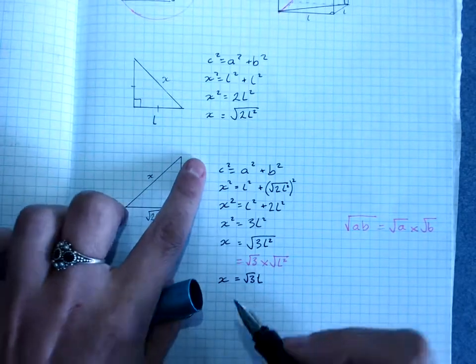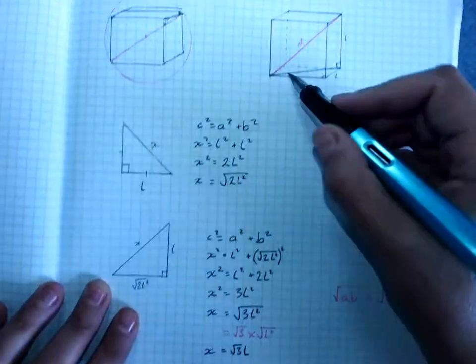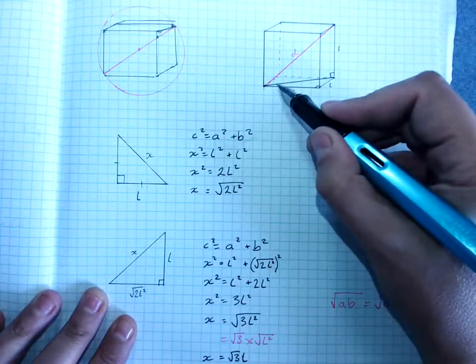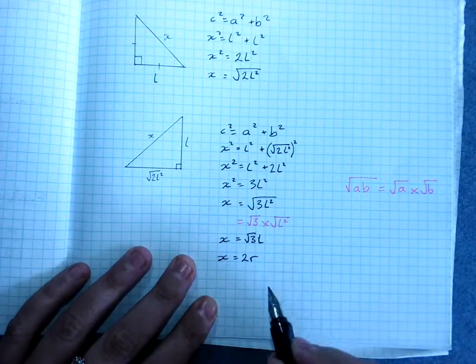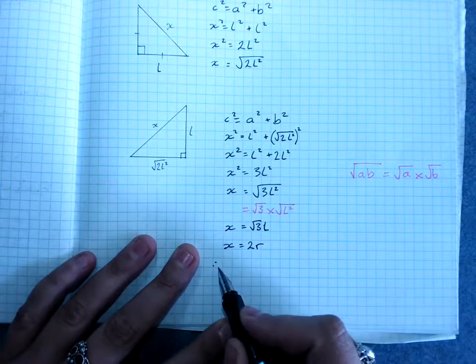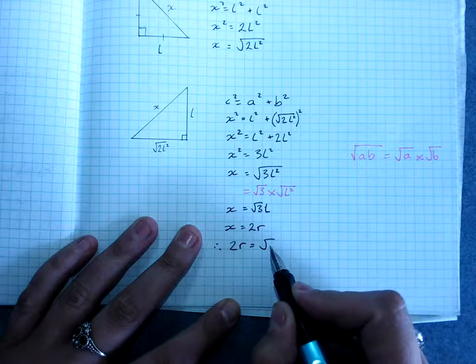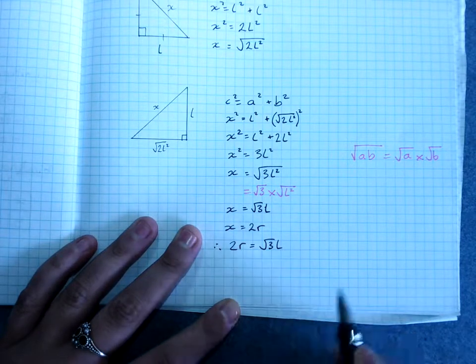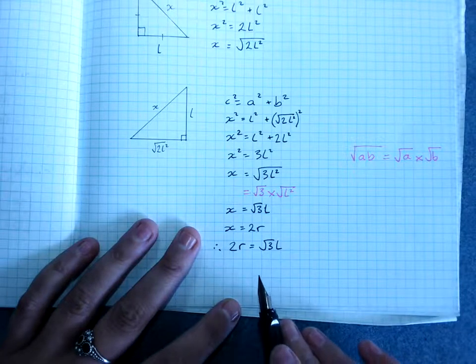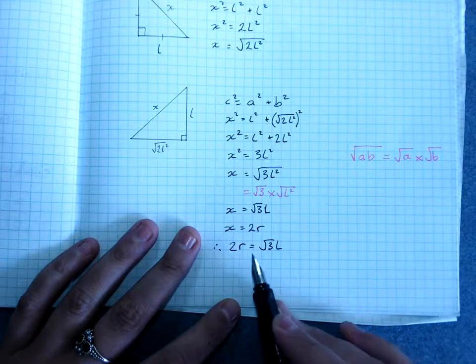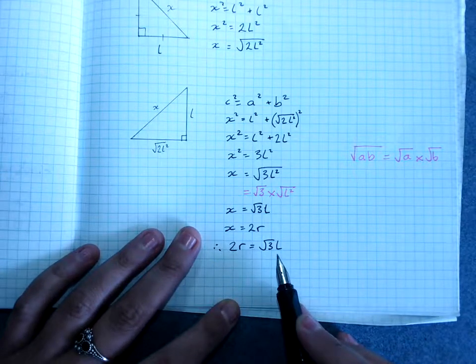Now X is also D, the diameter. And the diameter is 2 times the radius. So X equals 2 times the radius. So 2 times the radius equals root 3 times the length of the square. We wanted to get the ratio of R to L, the radius of the sphere to the length of the cube.